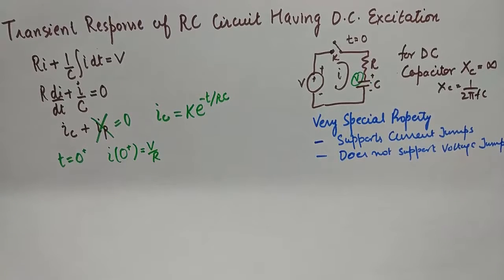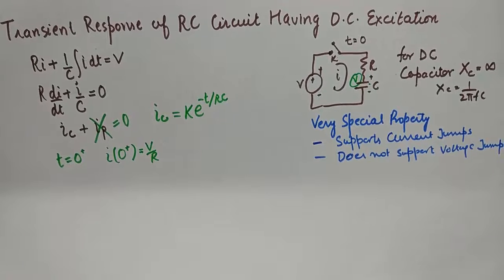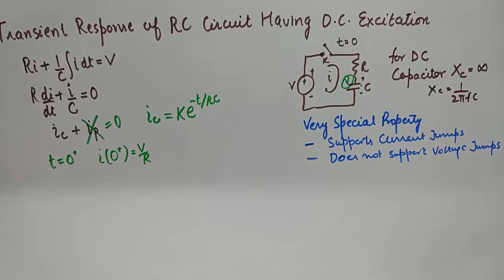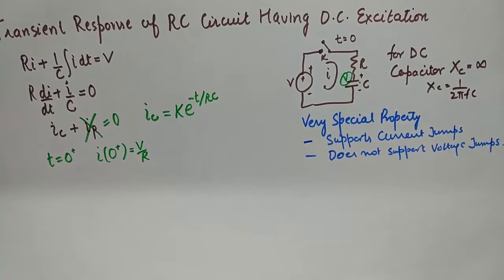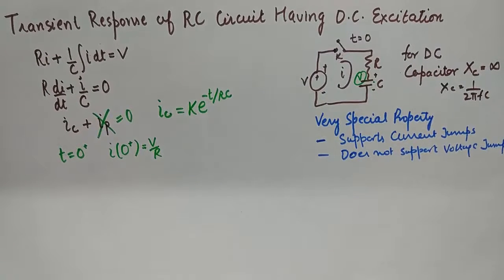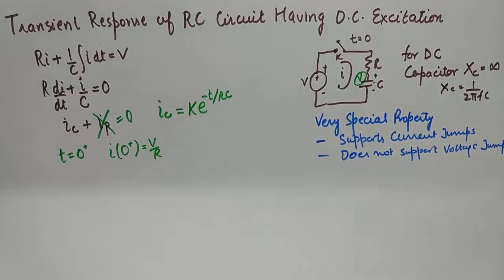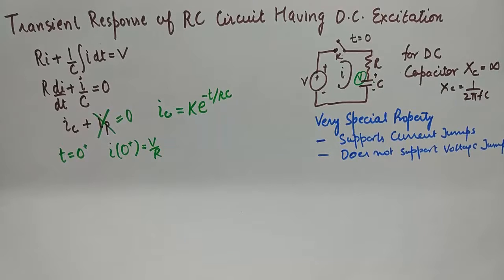And that special property of capacitor is that it supports current jumps and it does not support voltage jumps. In other words the voltage will develop across capacitor gradually. You can see the curve of the voltage being developed but the capacitor is going to support current jumps. It will start with the current V/R at time t equals 0.